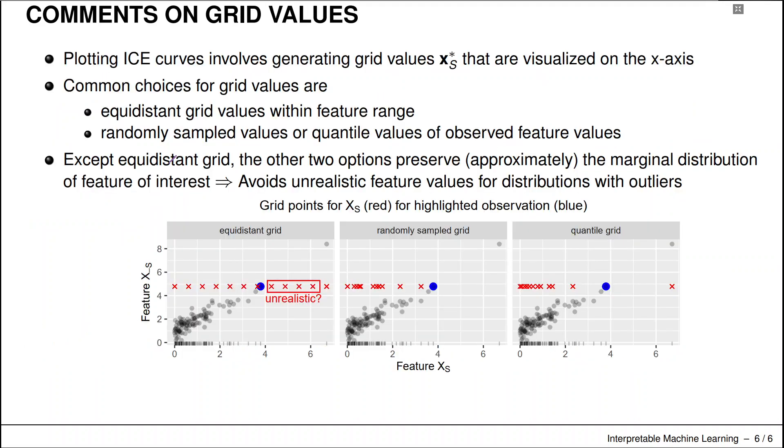Some comments on how these grid values are usually constructed. Very often we have a few common choices: we can either use an equidistant grid value for the feature range.